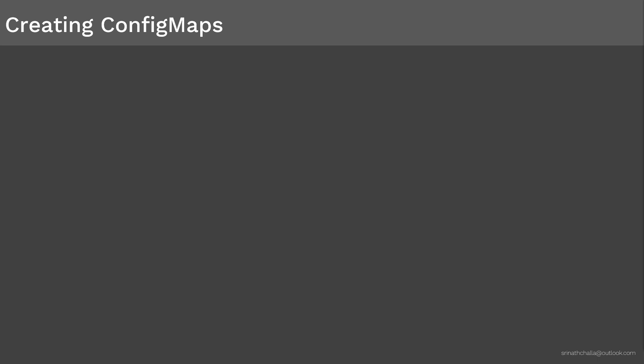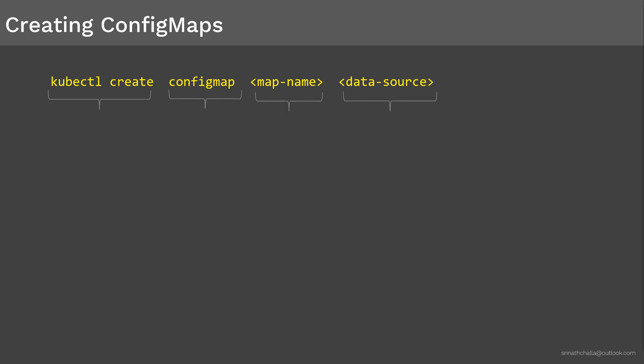To create ConfigMaps, we use the kubectl create configmap command from directories, files, or literal values. We use the standard kubectl create command, followed by the ConfigMap name, and finally the data source. This data source can be a directory, file, or a literal value. If you are using a file or a list of files inside a directory, you use the --from-file option followed by the file or directory name. If you are using just a key-value pair, you use the --from-literal option. Once you create the ConfigMap, you can use kubectl describe or kubectl get to display information about it.